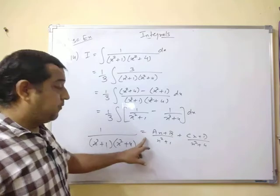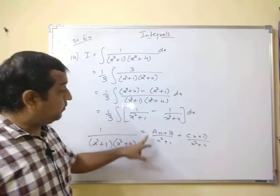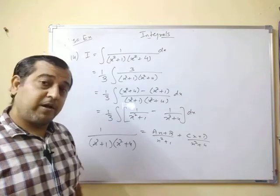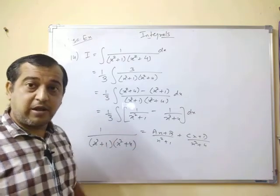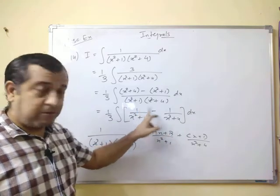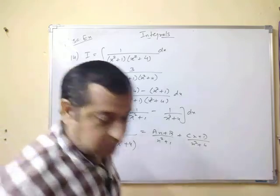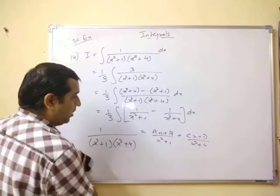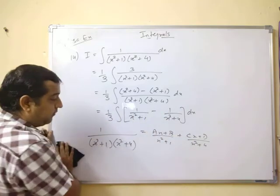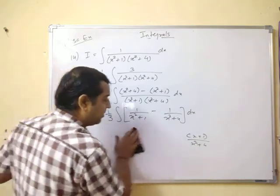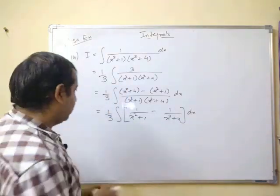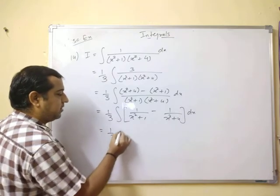Now if you proceed by this method, then also you will arrive at this step only. Your A and C both will turn out to be 0. You proceed by this method. A and C compulsory will be 0. Your B will turn out to be 1 and D will turn out to be minus 1. Sorry, B will turn out to be 1 by 3 and D will be turned out to be minus 1 by 3. If you have to proceed, you proceed by that method. You will get the same result.